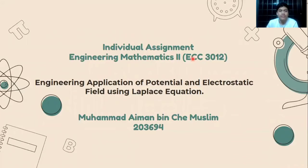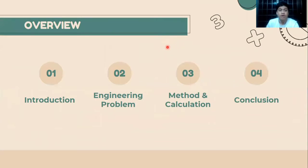Assalamualaikum and hello, my name is Muhammad Aiman bin Cik Muslim and my metric number is 203694. I'm going to present my individual assignment. The topic is engineering application of potential and electrostatic field using Laplace equation. We move to the overview: number one is introduction, number two is engineering problem, number three is method and calculation, and number four is conclusion.